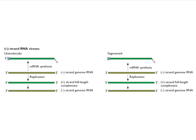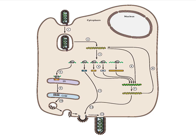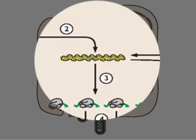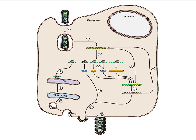We'll look first at the non-segmented RNA viruses. An example of this is VSV, which gets in by endocytosis. The genome gets into the cytoplasm. It is an RNA-protein complex — negative strand RNA with the polymerase attached — and the polymerase can then make individual messenger RNAs.